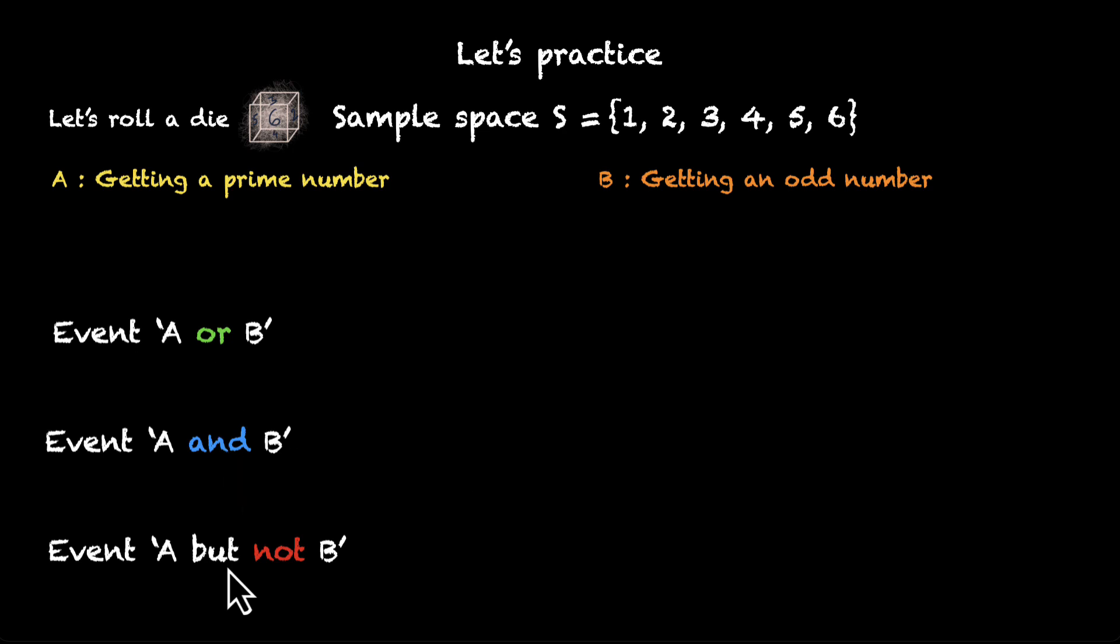Before we start with these three events, let's look at events A and B. Getting a prime number. There are three prime numbers: 2, 3, and 5. So, that's your event A. Getting an odd number. Well, there are three odd numbers: 1, 3, and 5. That's your event B.